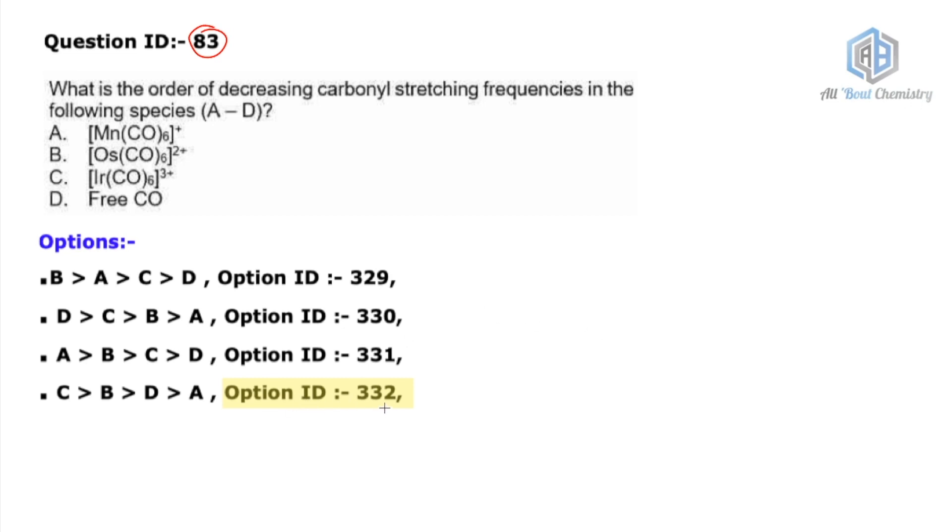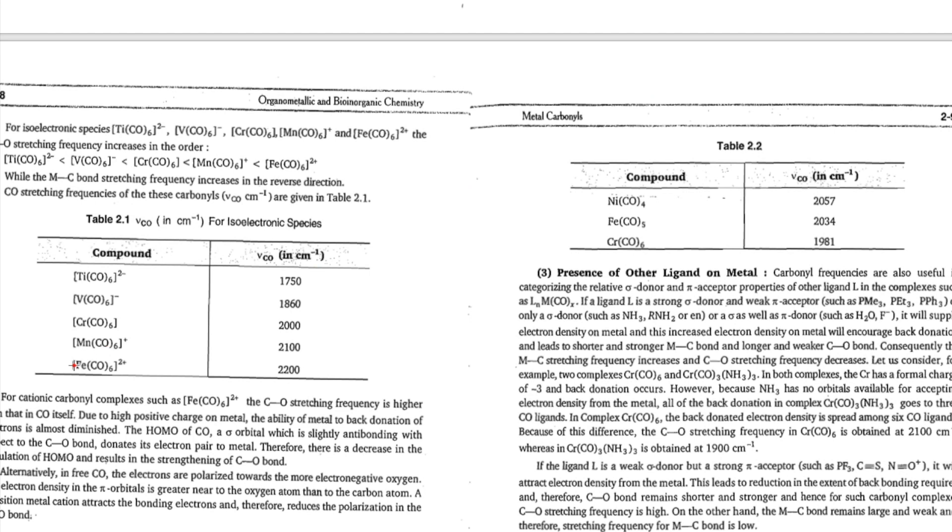If you see, all these species are isoelectronic in nature. The correct option given according to the answer key is 332, which is option number D, and that's exactly the correct answer. I'll give you reference of this. Free CO, you all know the value for the stretching frequency is 2143 cm⁻¹.